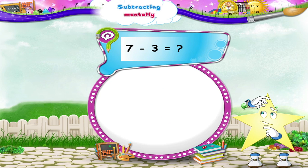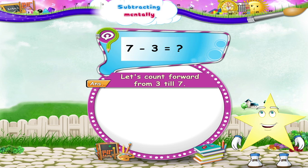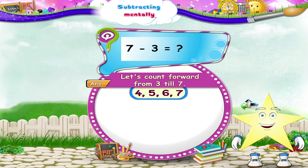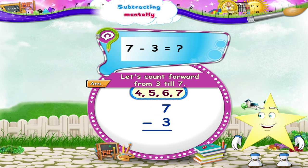What about 7 minus 3? Let's count forward from 3 till 7: 4, 5, 6, 7. That's 4 numbers, right Starry? So 7 minus 3 is 4.